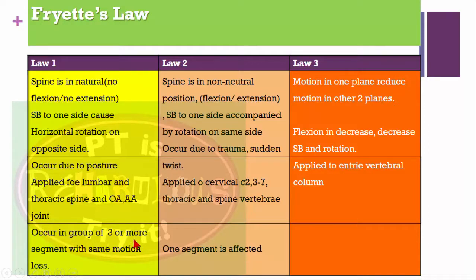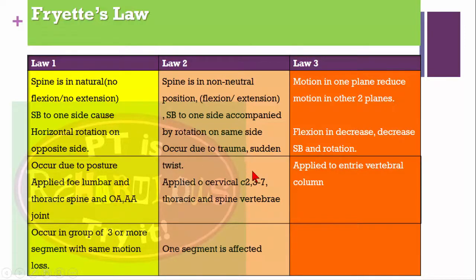The second law states that when the spine is in a non-neutral position — for example, with flexion or extension restriction — side bending to one side is combined with rotation to the same side. This especially applies following trauma or sudden twisting. It applies from C2-C3 through C7 and also to the thoracic and lumbar spine, and only one segment is affected.